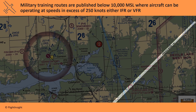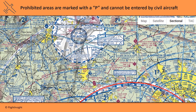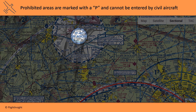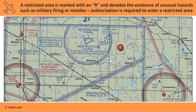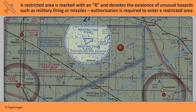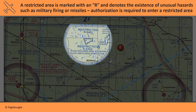There's other airspace besides the A-G classification called Special Use Airspace. Starting with prohibited airspace, it's marked with a P and, as its name suggests, can't be entered by civil aircraft. Here's a prohibited airspace around Camp David in Maryland. A restricted area is marked with an R and denotes the existence of unusual hazards such as military firing or missiles. Authorization from air traffic control is required to enter a restricted area.